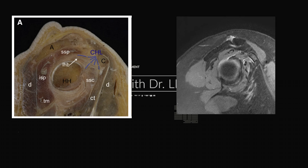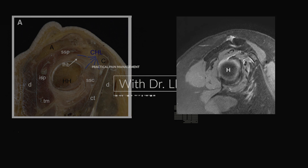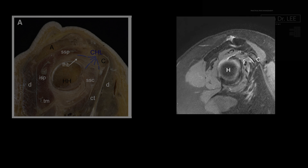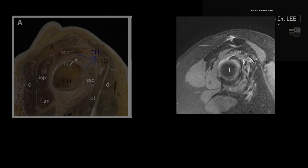Let's match section A with the sagittal T2-weighted image: humerus head, coracoid process, acromion, supraspinatus muscle and tendon, subscapularis muscle and tendon, long head of biceps tendon, and the coracohumeral ligament.